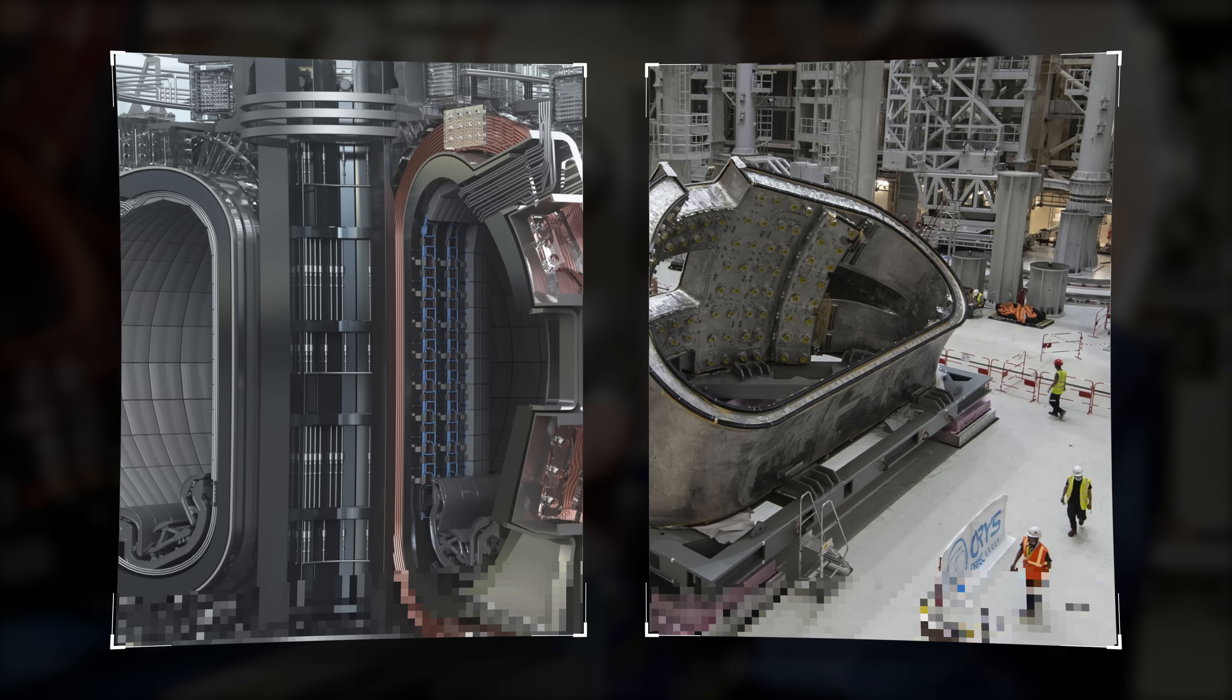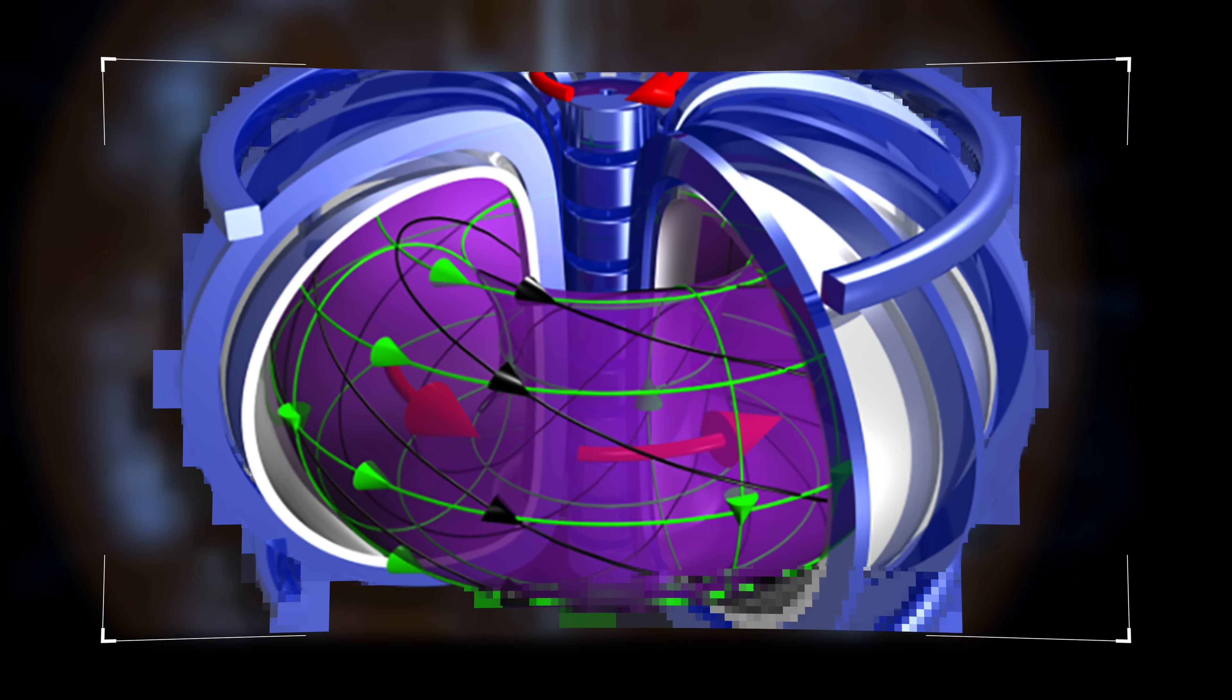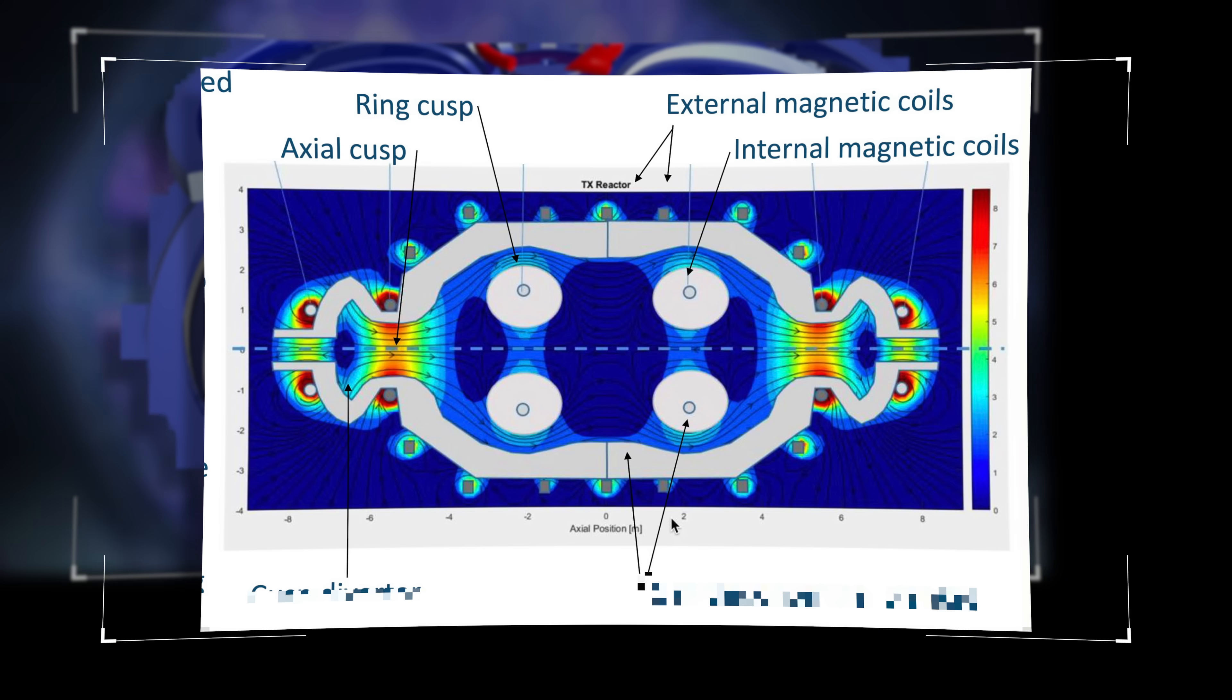Unlike the giant tokamaks used in fusion research, Lockheed's CFR used a different design: a magnetic mirror and cusp configuration. Instead of wrapping plasma around a donut-shaped loop, they designed a closed magnetic bottle that squeezes the plasma into the center using magnetic fields shaped like mirrors and cusps.